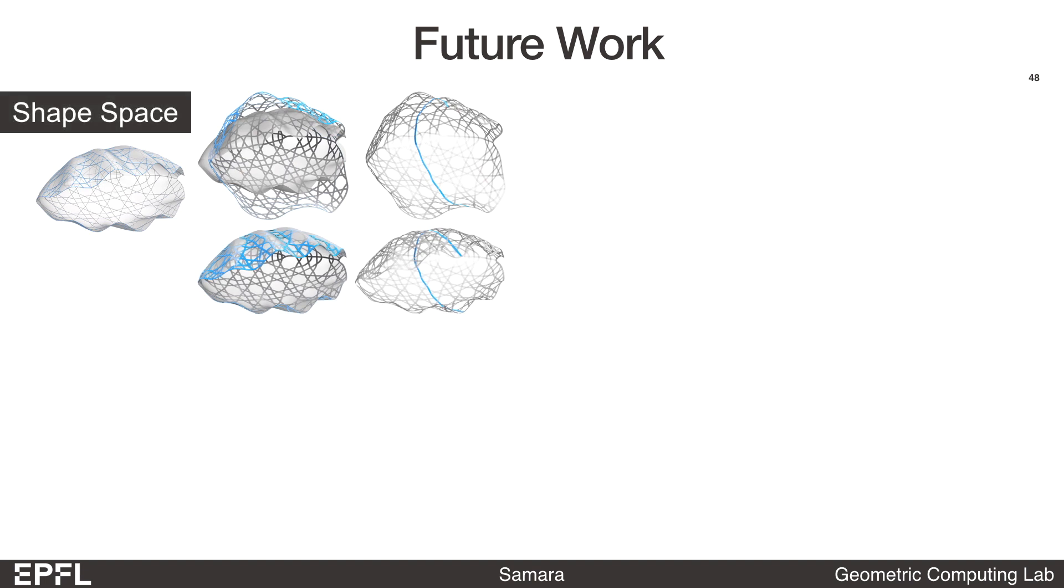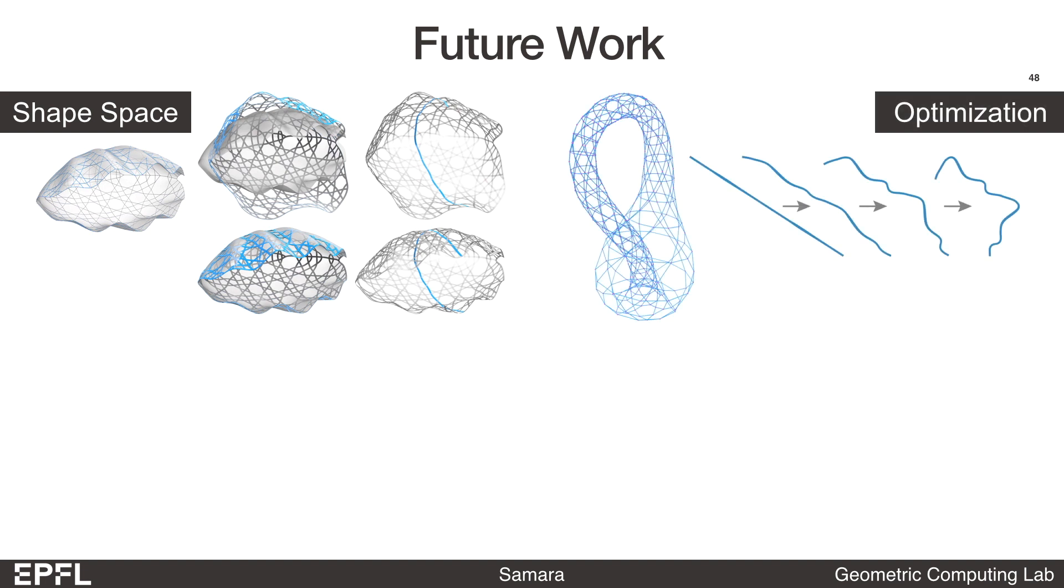A potential research direction is to study the shape space of woven structures. In our experiments, we haven't encountered any failure cases for closed surfaces. But it will be interesting to know, for example, what are the optimal external forces required for a structure with open boundary to stay in the target shape.